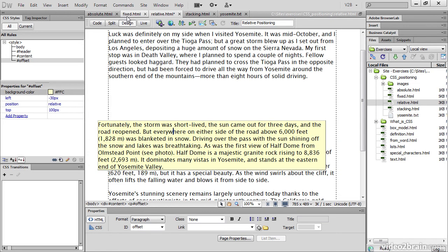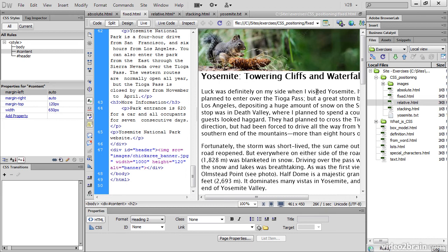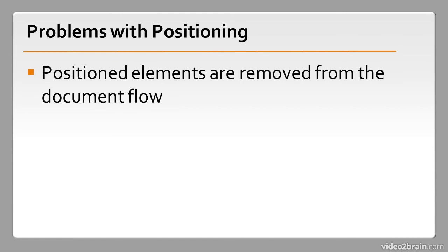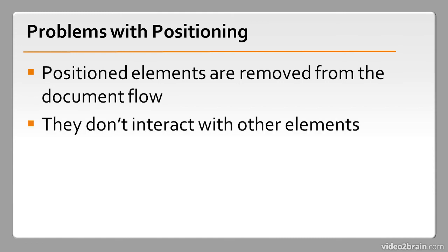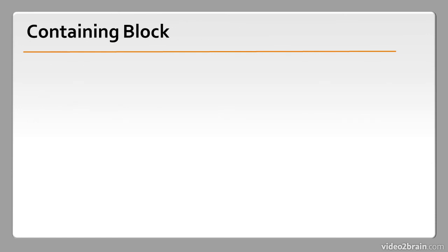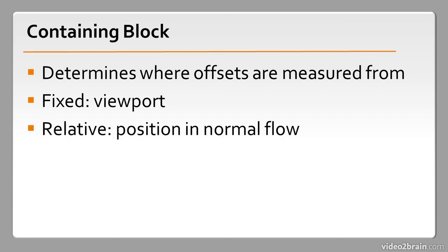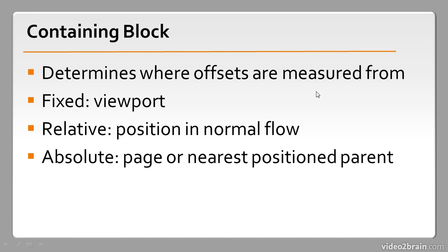The relatively positioned paragraph and the fixed banner at the top work in exactly the same way — the browser treats them as separate elements. The main problems when using CSS positioning are that positioned elements are removed from the normal flow of the document and don't interact with other elements. You can't flow text around a positioned element or give it a margin. The other point to bear in mind is the containing block: for fixed positioning it's always the browser viewport; for relative positioning it's the element's position in normal flow; and for absolute positioning it's the page or the nearest positioned parent element.